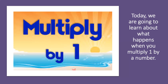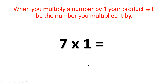So today we are going to learn about what happens when you multiply one by a number. When you multiply a number by one, your product or your answer will be the number you multiplied it by. So what does that mean? I have two factors in my number sentence: seven times one. So one is my factor and seven is my factor. When you multiply a number by one, your product will be the number you multiplied it by.